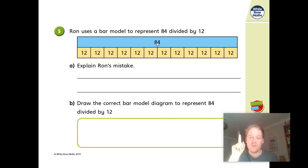Can you explain Ron's mistake? Okay, so think about it now. You've got 12, 12, 12, 12, 12, 24, 36, 48, 60, 72, 84, 96. We've got far more than 84 here. So what's his mistake?